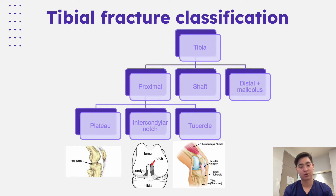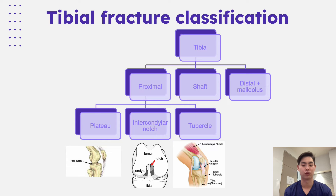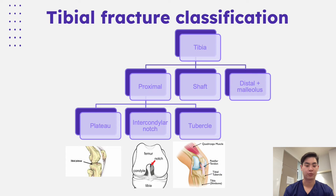With regards to the classification of tibial fractures, it's essentially based on anatomical location. It can be divided into the proximal aspect of the tibia, the shaft, or the distal malleoli region. The proximal region includes fractures of the plateau, the intercondylar notch, or the tibial tubercle — these three different regions of the proximal tibia — as well as further down on the shaft and the distal malleoli.